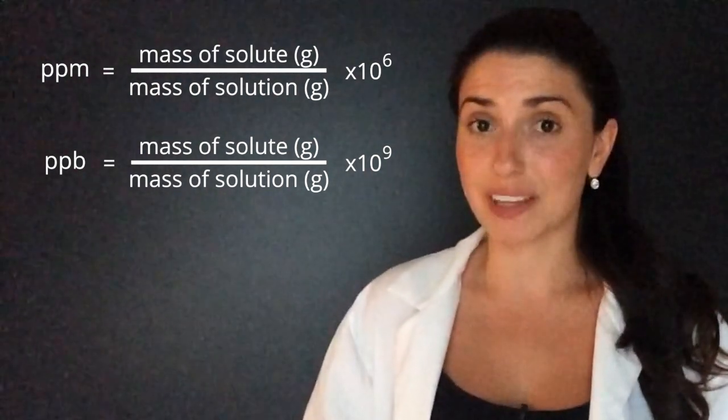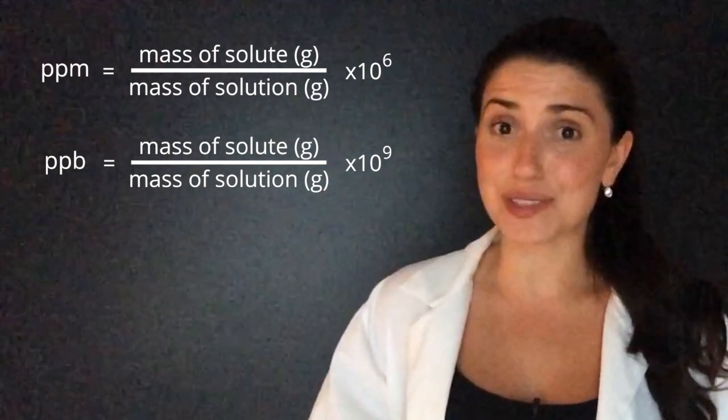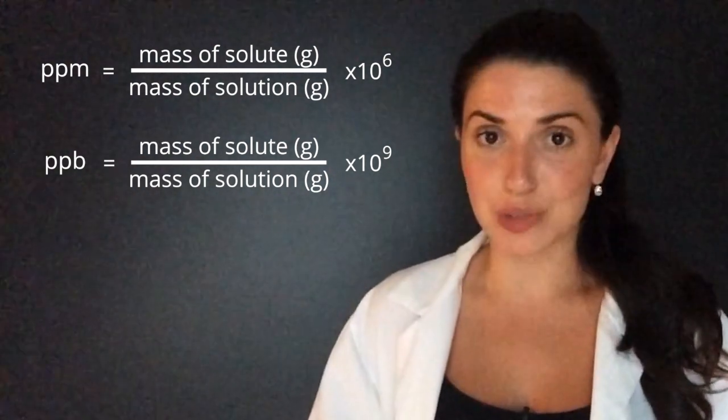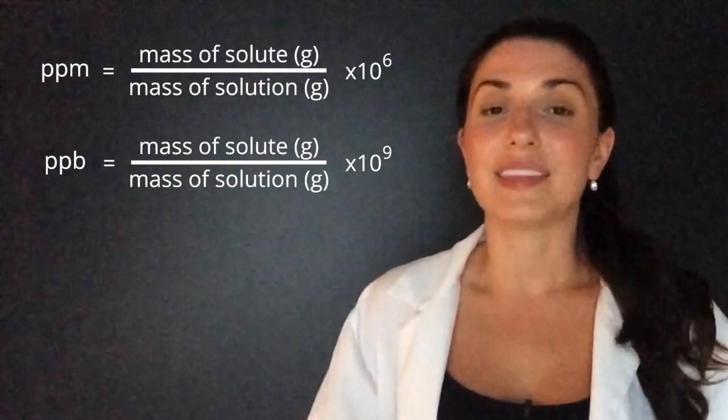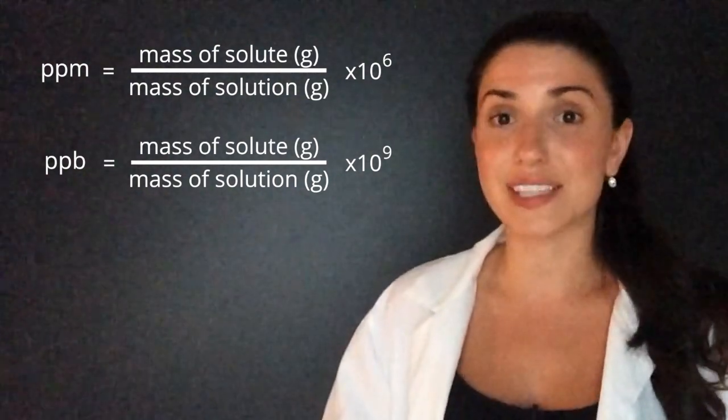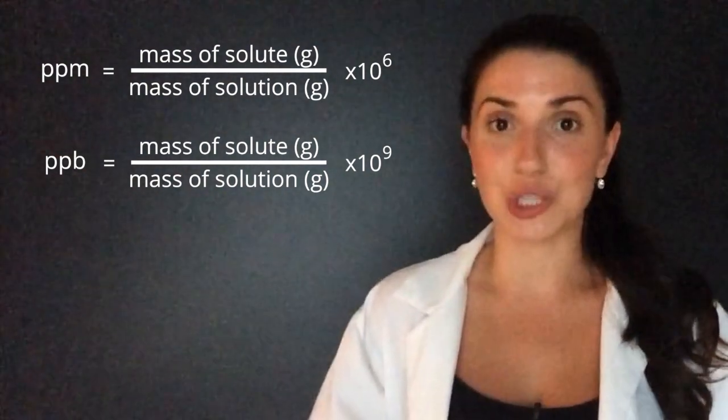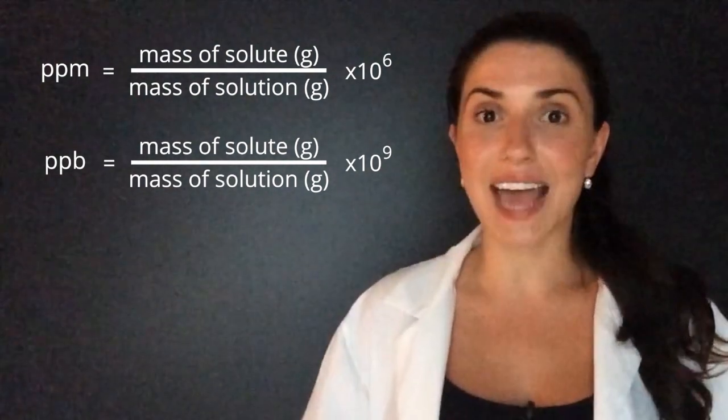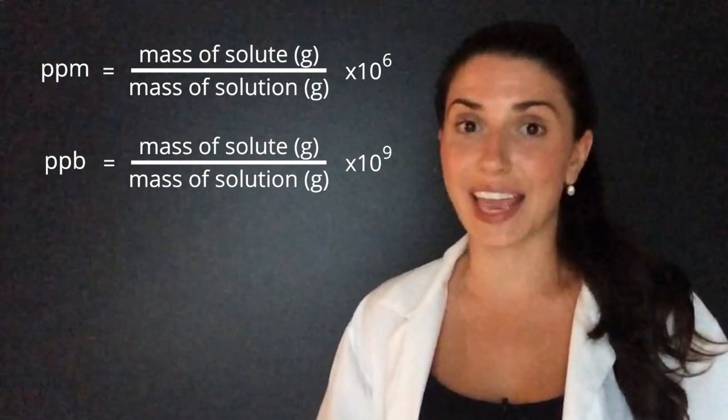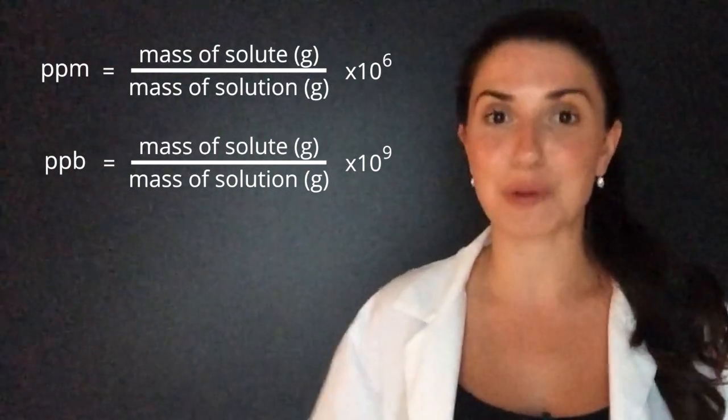Parts per million and parts per billion are used in everyday life, and they're not always used for liquids. An example of it used for solids is in an iron pill you get at the drugstore. The amount of iron in that pill is written in parts per million. An example of parts per million used in gases is the air we breathe. When the weather network is telling us how much of the air has carbon dioxide in it, they put it in parts per million.